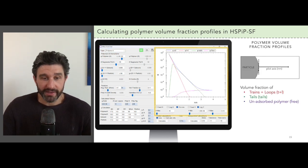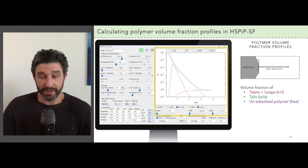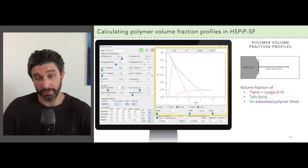So after clicking calculate you see the volume fraction profile output in the plotting window. These profiles are plots of local polymer volume fraction versus distance from the particle surface. The app gives you output for the total polymer volume fraction and also the contributions coming specifically from loops, trains, tails, and the unabsorbed polymers.